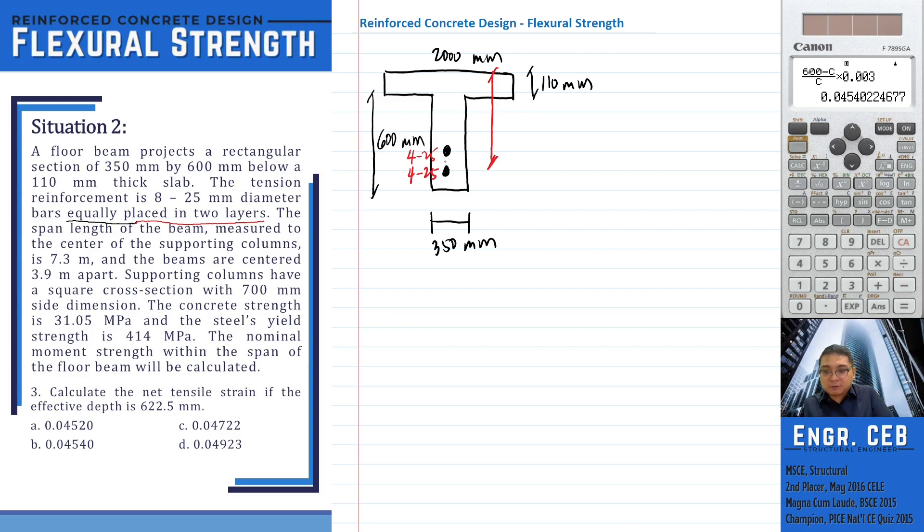Since we have two layers, the center of the reinforcement will be at the middle of the two layers. So the effective depth is this one, 622.5.